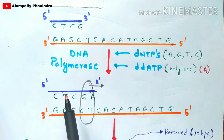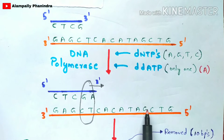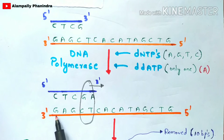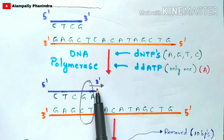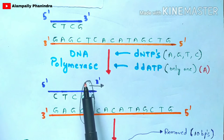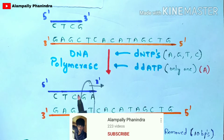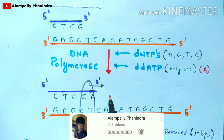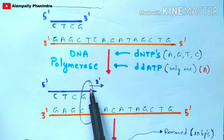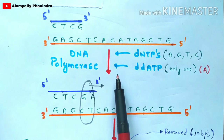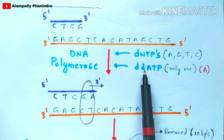DNA polymerase is then added. It runs along the template strand from three-prime to five-prime direction, synthesizing the new strand in the five-prime to three-prime direction. As it moves forward, it adds nucleotides complementary to the template strand. The DNA polymerase can accept either dNTPs or ddNTPs from the first test tube, which contains ddATP as the fifth ingredient.